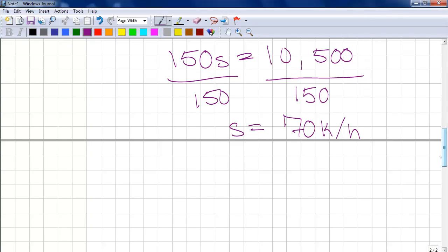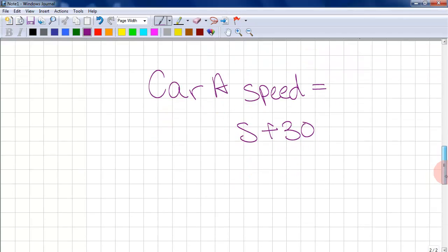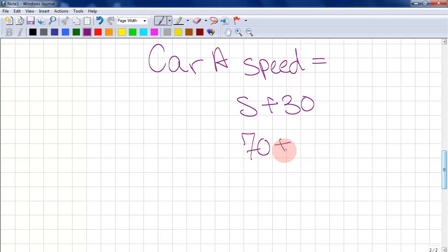We have to remember, though, what the original equation was asking, and it asked for the average speed of both cars. We've got the average speed of car B, because S is the speed of car B, and we must now find the average speed of car A. So, we now know the average speed of car B.